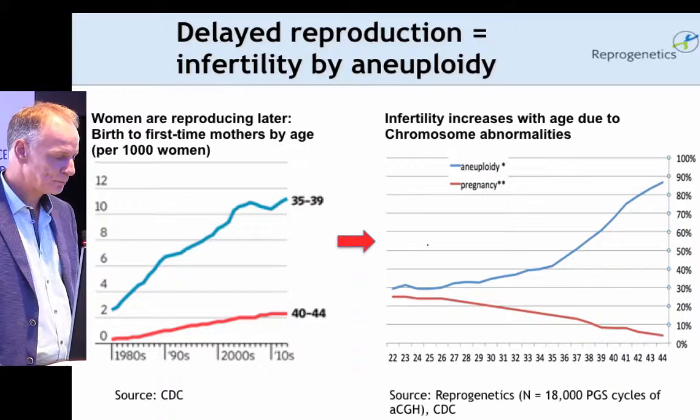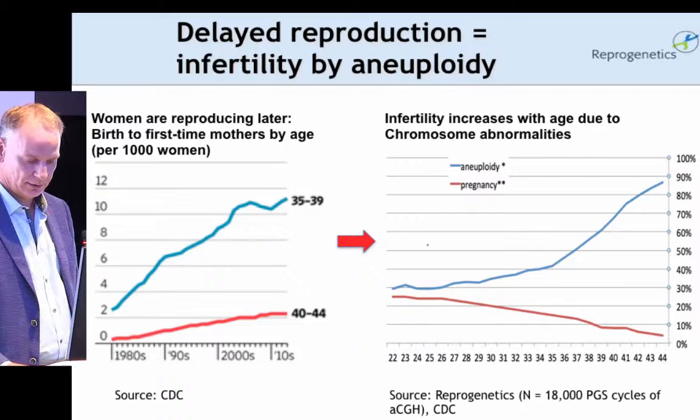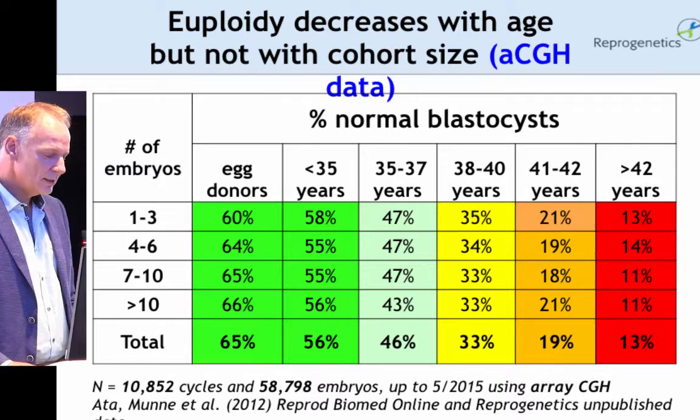This trend is happening all over the world and is even more accentuated in some countries, for instance China. This delay in reproduction equates into infertility by aneuploidy. The more you delay having children, the higher the chance that you will produce abnormal embryos and the typical decrease in implantation potential that we see.